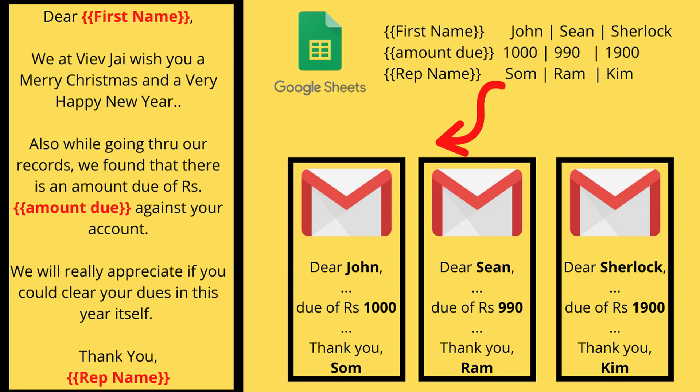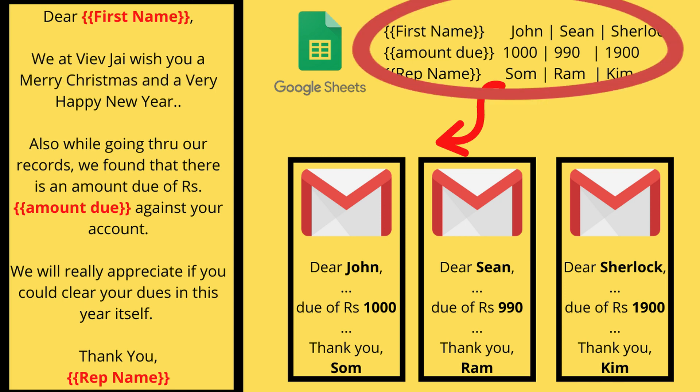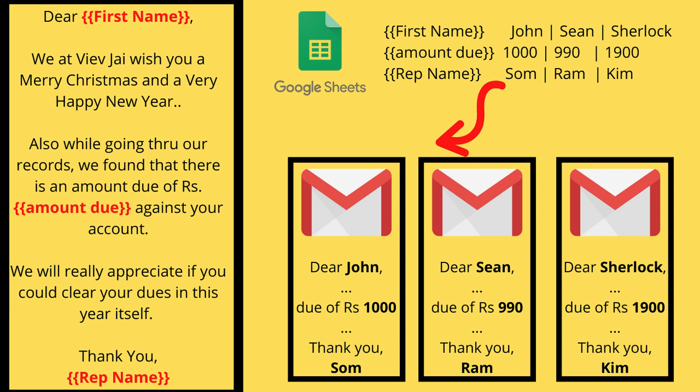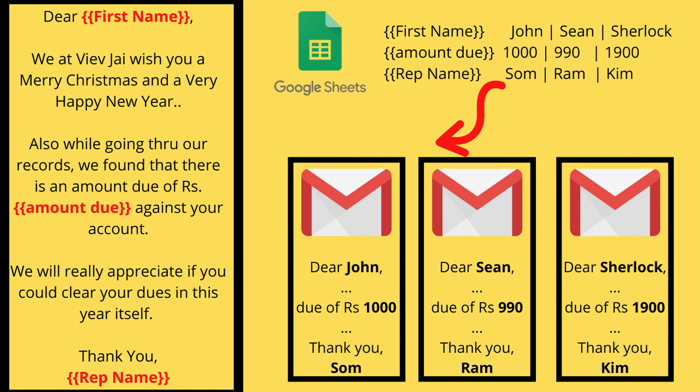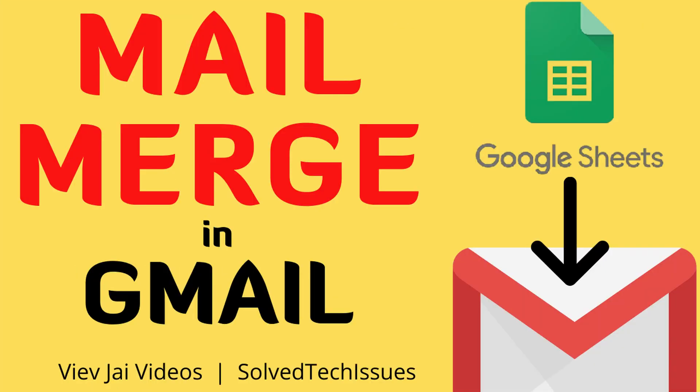For example, you can send an email saying 'Dear {{First Name}}' where the first name is picked directly from Google Sheets, wishing them a merry Christmas and a happy new year, while also reminding them of a pending amount on their account. In this email we've used three parameters: the recipient email ID, the first name to make it personal, and the pending dues amount, which is specific to each person.